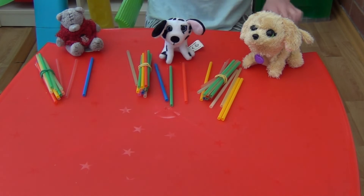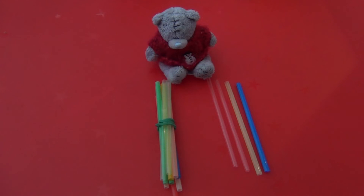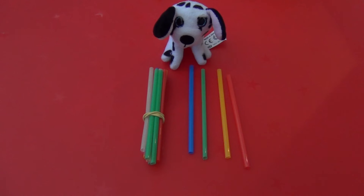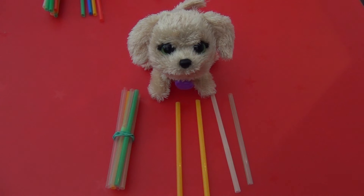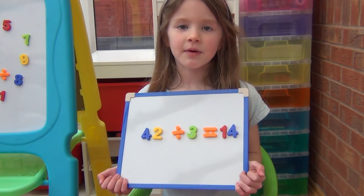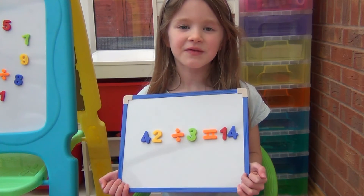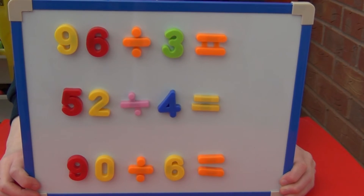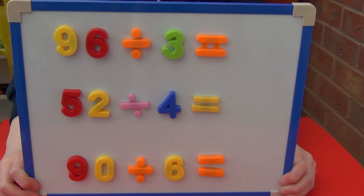So now each teddy has 1 ten and 4 ones, which together make 14. So 42 divided by 3 equals 14. Why don't you pause the video and try some of these yourself.